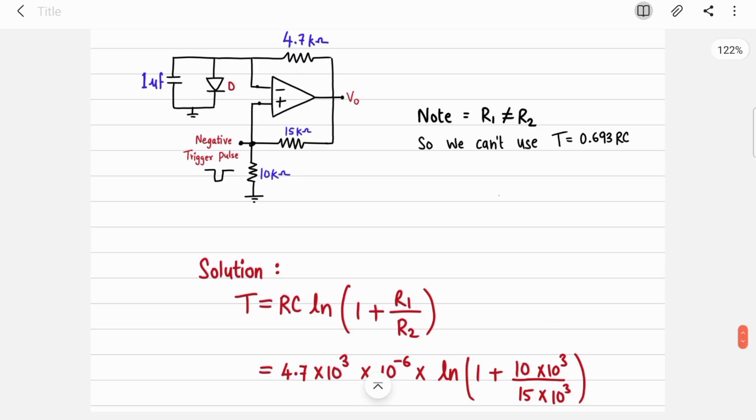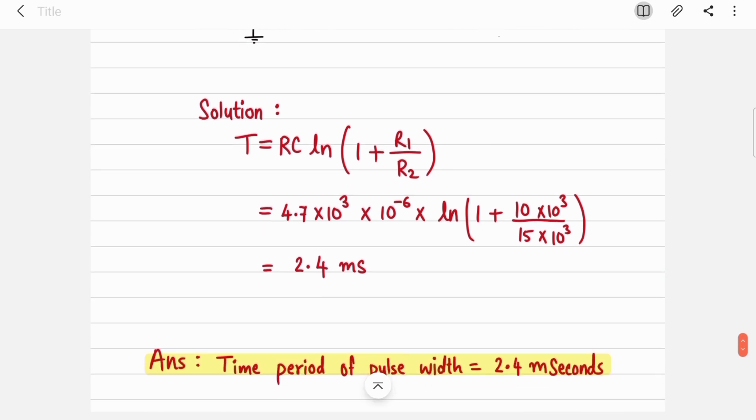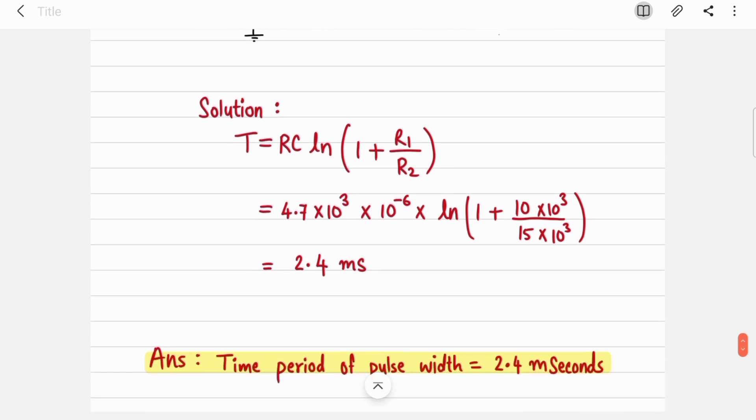Now you just have to substitute values. Your R is 4.7k, then C is 1 microfarad, then ln(1 + R1/R2) where R1 is 10 kilohms and R2 is 15 kilohms. Just put this everything in calculator and your time period will come out as 2.4 milliseconds. So the pulse width of your output is 2.4 milliseconds.